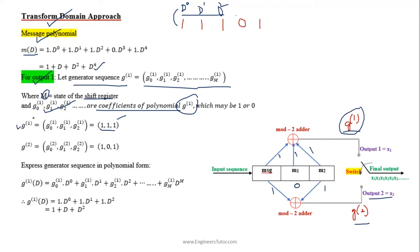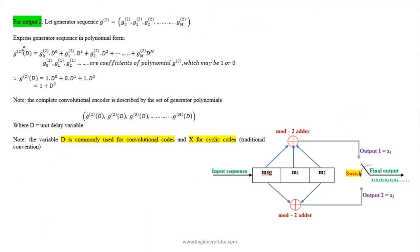We express these generator sequences in terms of polynomial notation. So g1(d) = 1 + d + d². Similarly for the second output we obtain the generator sequence g2(d) in terms of polynomial representation, where d is the unit delay variable.